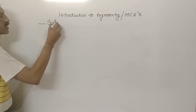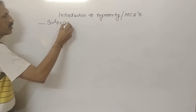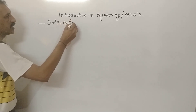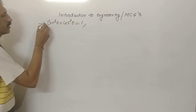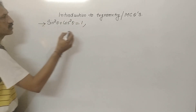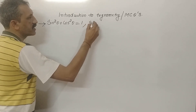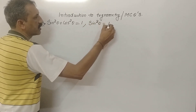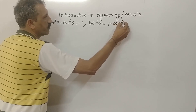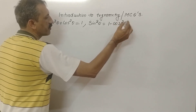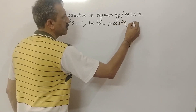The first formula is sin square theta plus cos square theta, where theta is the angle, is equal to 1. We will use both sin square theta as well as cos square theta. Formulas are very important to remember, otherwise the question will not be solved.